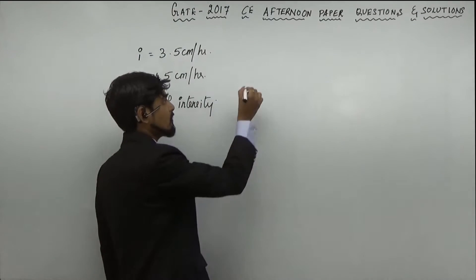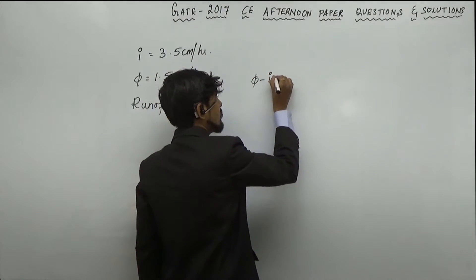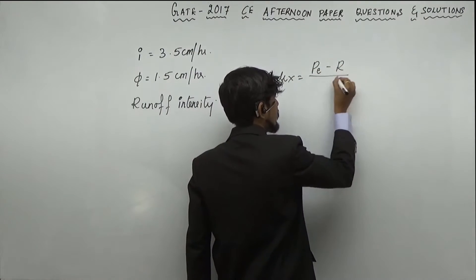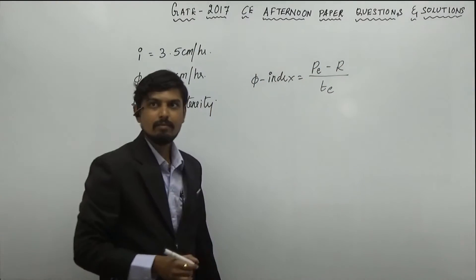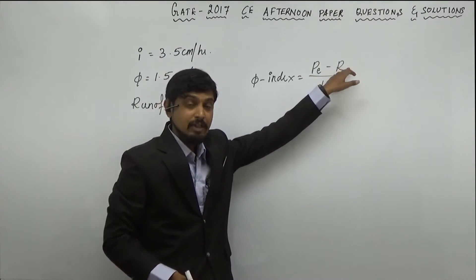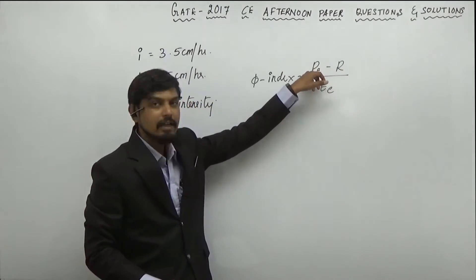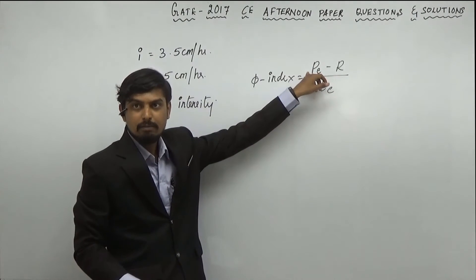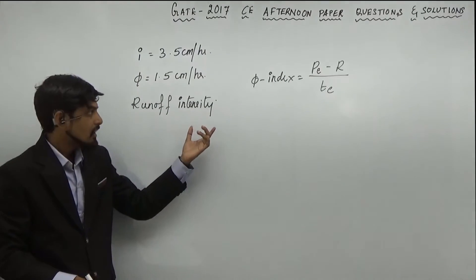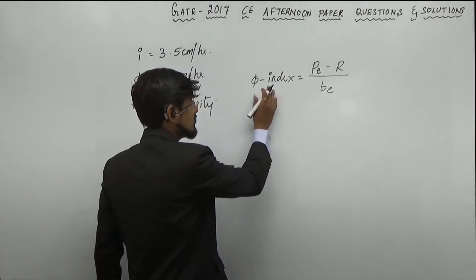If we know the formula for phi index, phi index is equal to pe minus r divided by te. Here, r is your runoff depth, te is time, te is your rainfall corresponding to time te. But here in equation, you have asked runoff intensities. Hence, everything I am going to take in terms of intensities here.